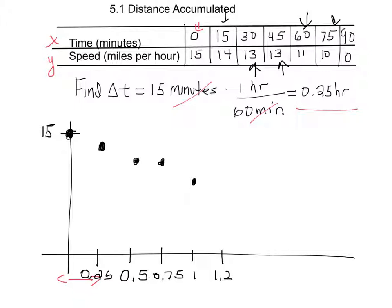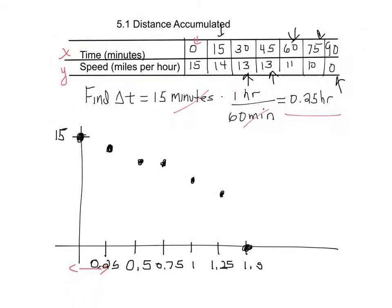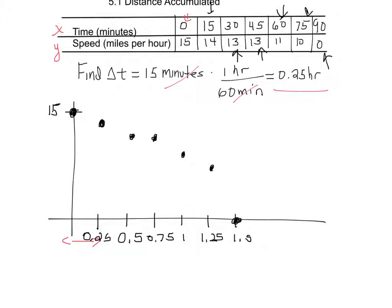Adding 0.25 again gives 1.25 hours, which is 75 minutes, and that's at a speed of 10. Finally, the last value is at 90 minutes — an hour and a half — and that's at a speed of zero. So when given a table, the first thing you do is plot each one of these points. Now let's connect them so you can see what the function looks like.